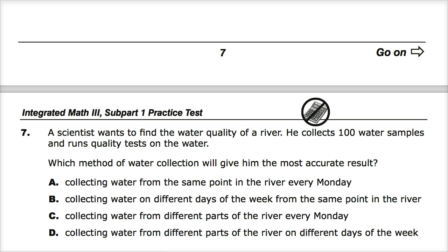So A says collecting water from the same point in the river every Monday. That's really limited. You could basically find out what happens on Mondays. And if you have maybe a factory that dumps sewage into the river around that time, it's probably going to be worse than it would be normally. Or there could be other things involved, animal movements and things that would make Monday worse for some reason.